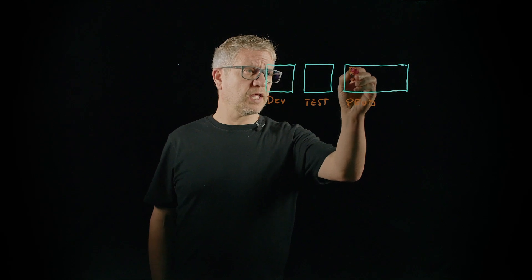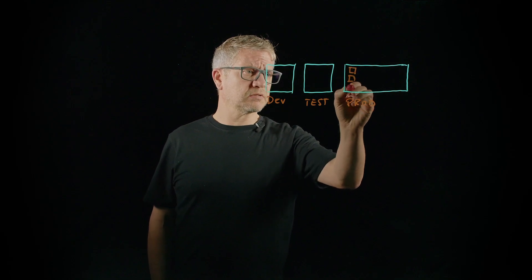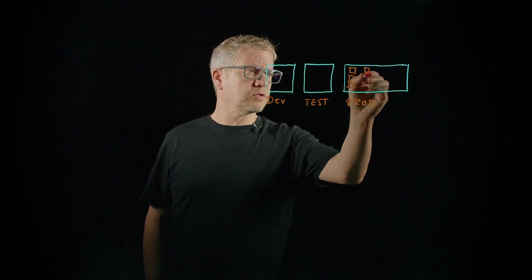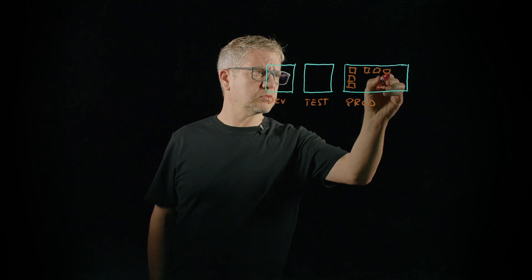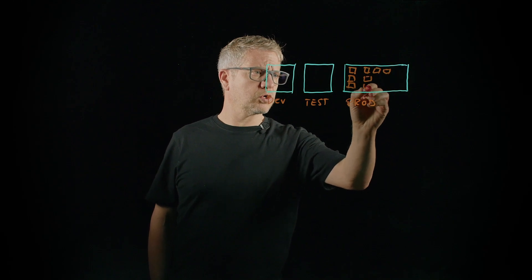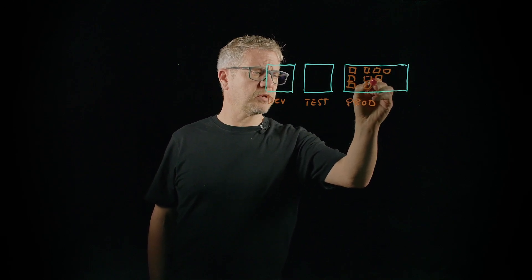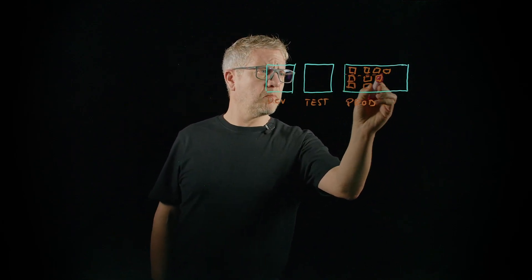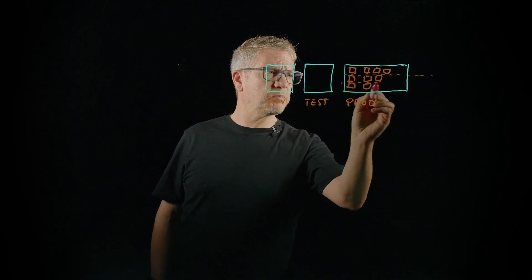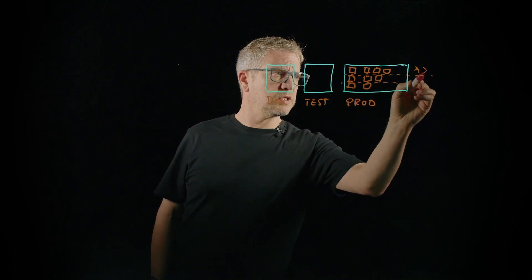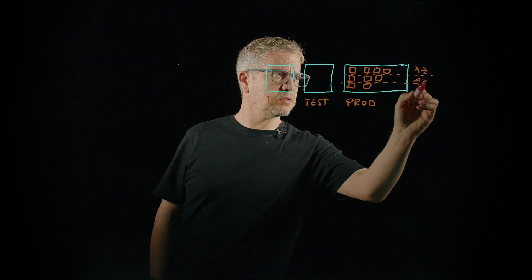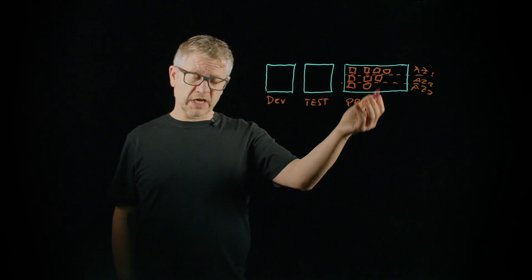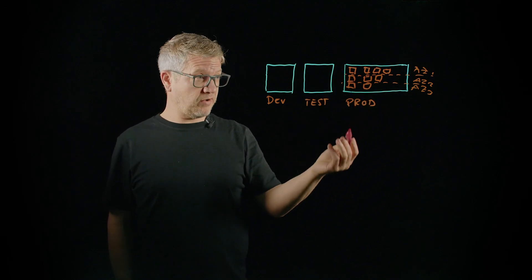So it comes with at least three master nodes for the control plane and multiple worker nodes for your workloads and applications. And you will be placing these nodes into multiple availability zones. Here is AZ1, AZ2, and AZ3. You guessed that for even higher availability.